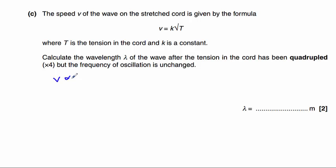We have v is proportional to the square root of T. So if we have 4 times T, the square root of 4 is 2, so that will give us twice the speed. The speed of our wave will double if we increase the tension by 4 times.